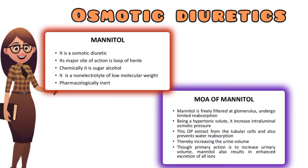The next class is osmotic diuretics. The main example is mannitol. Mannitol's major site of action is the loop of Henle. Osmotic diuretics act at the loop of Henle. Chemically, mannitol is a sugar alcohol.